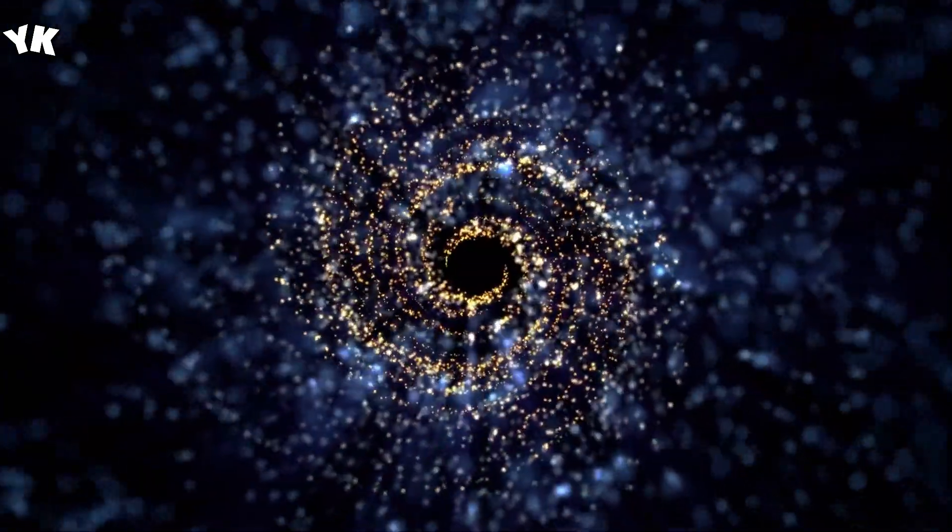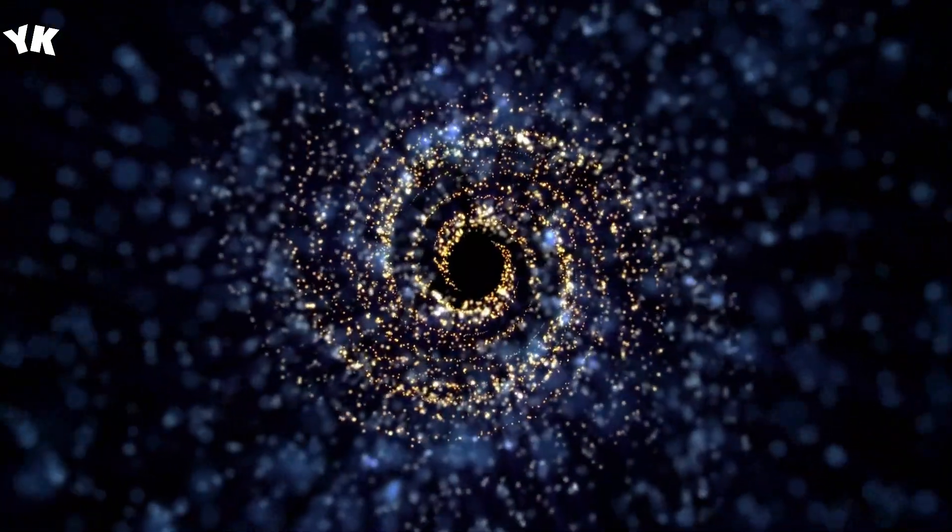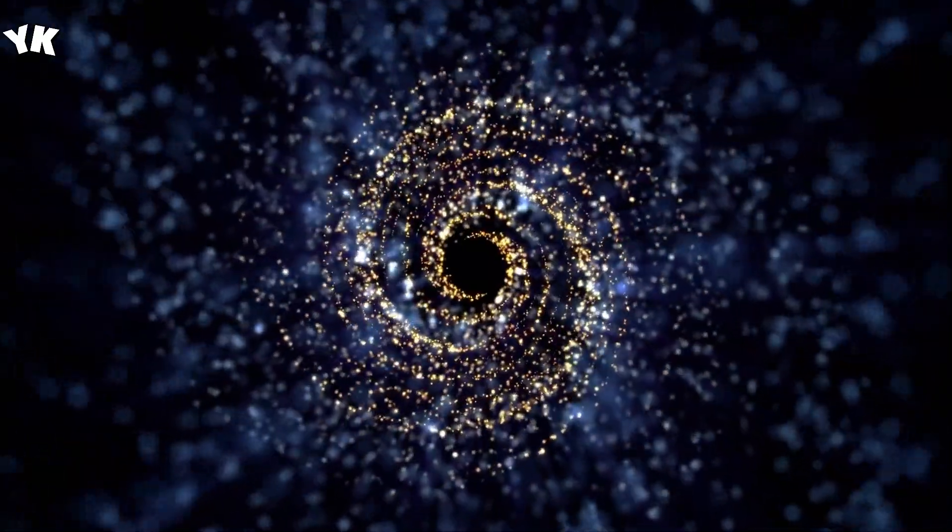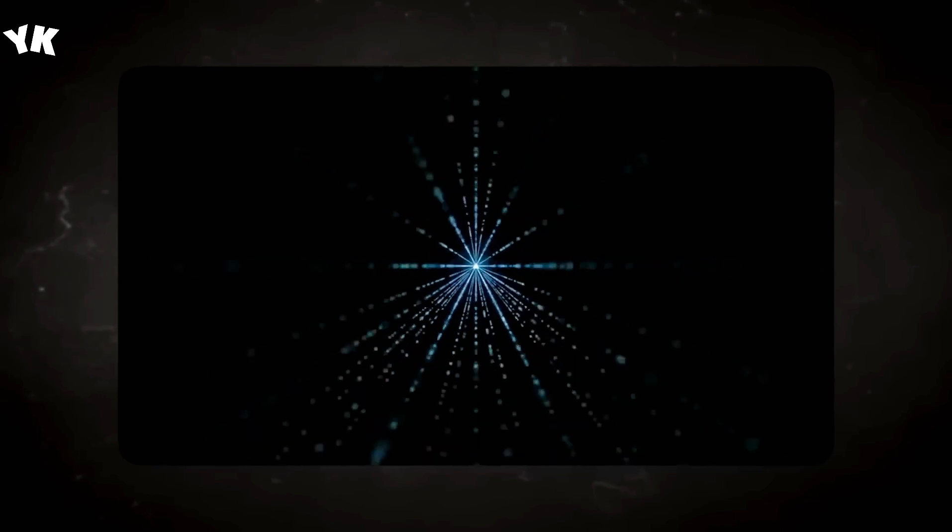This theory challenges what we might naturally think. It says that the rules of physics are the same for everyone, even if they're not moving. This is different from our everyday experience, where we might think that if something is already moving and we add more speed, it gets faster. But Einstein's theory says there's a maximum speed that nothing can go faster than, and that's the speed of light. In this way of thinking, events that seem to happen at the same time for us might not seem that way for people moving around almost as fast as light.